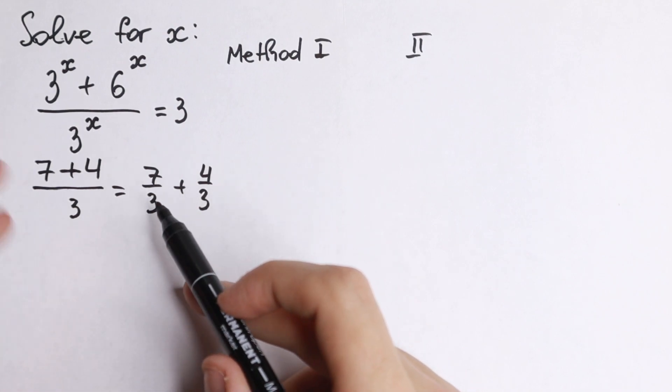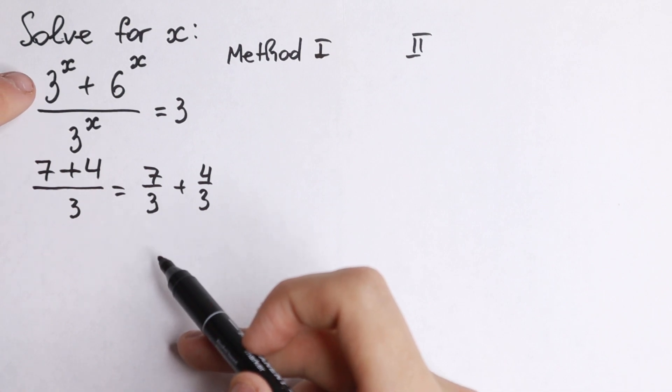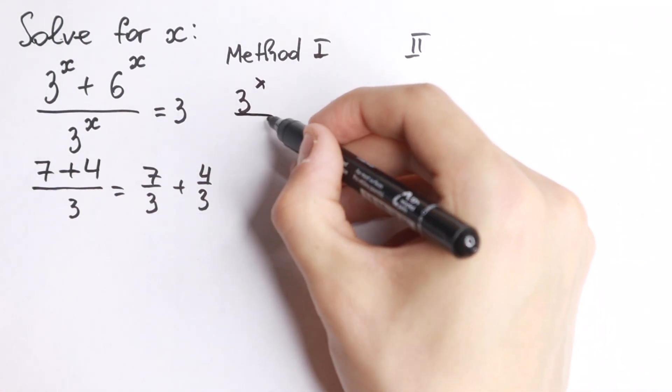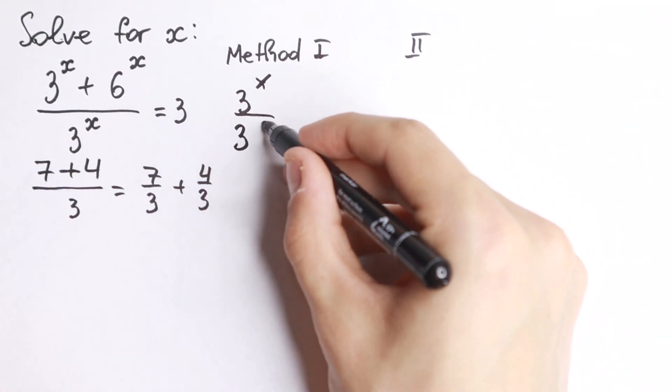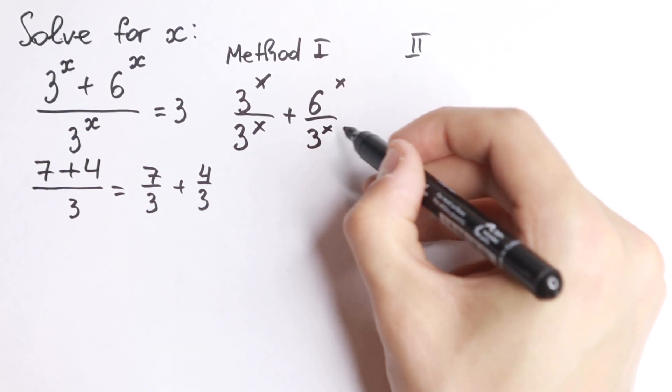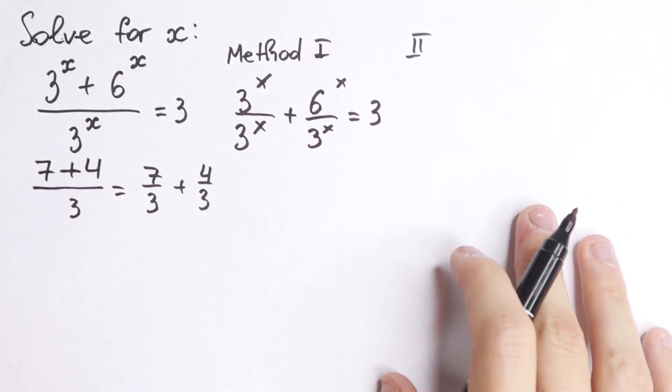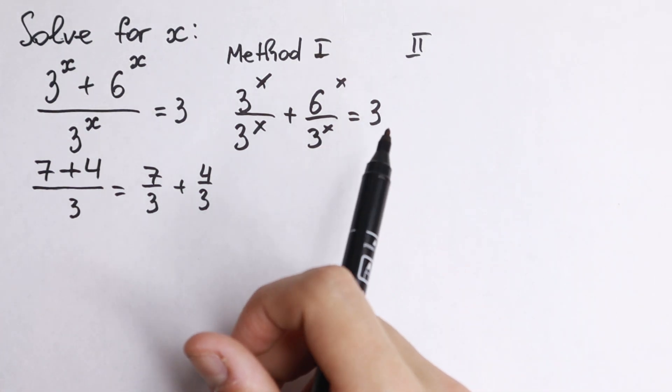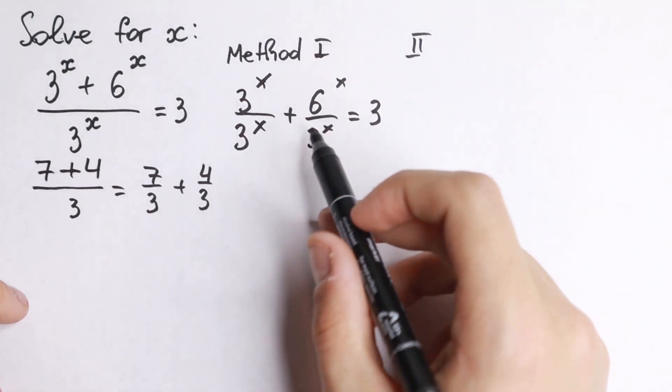Let's use this rule but in reverse way. We can easily divide this by this and 6 to the power x by 3 to the x. We'll have 3 to the x over 3 to the x plus 6 to the x over 3 to the x equal to 3. As you can see, we just use this rule, this is like a really good trick.